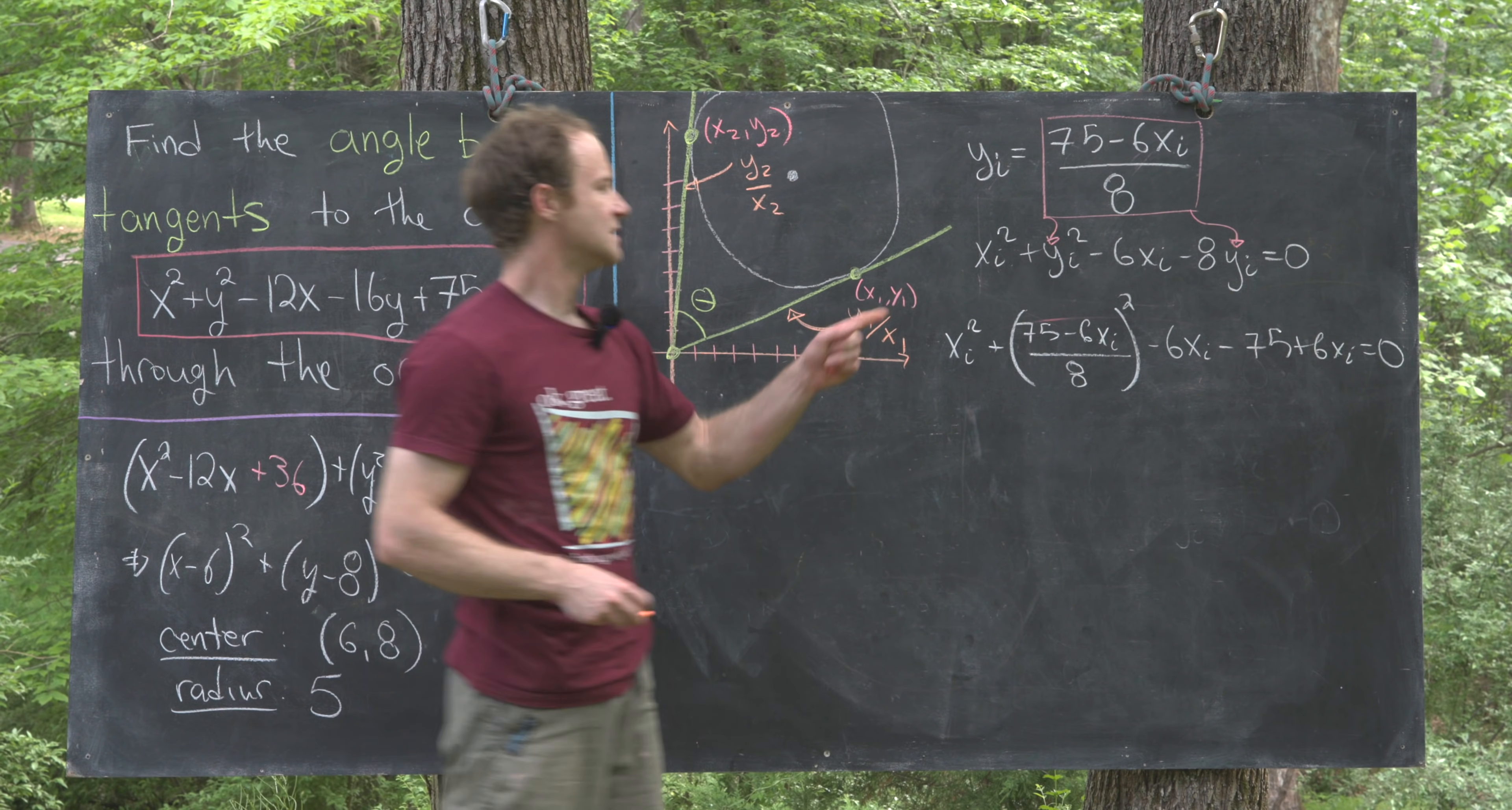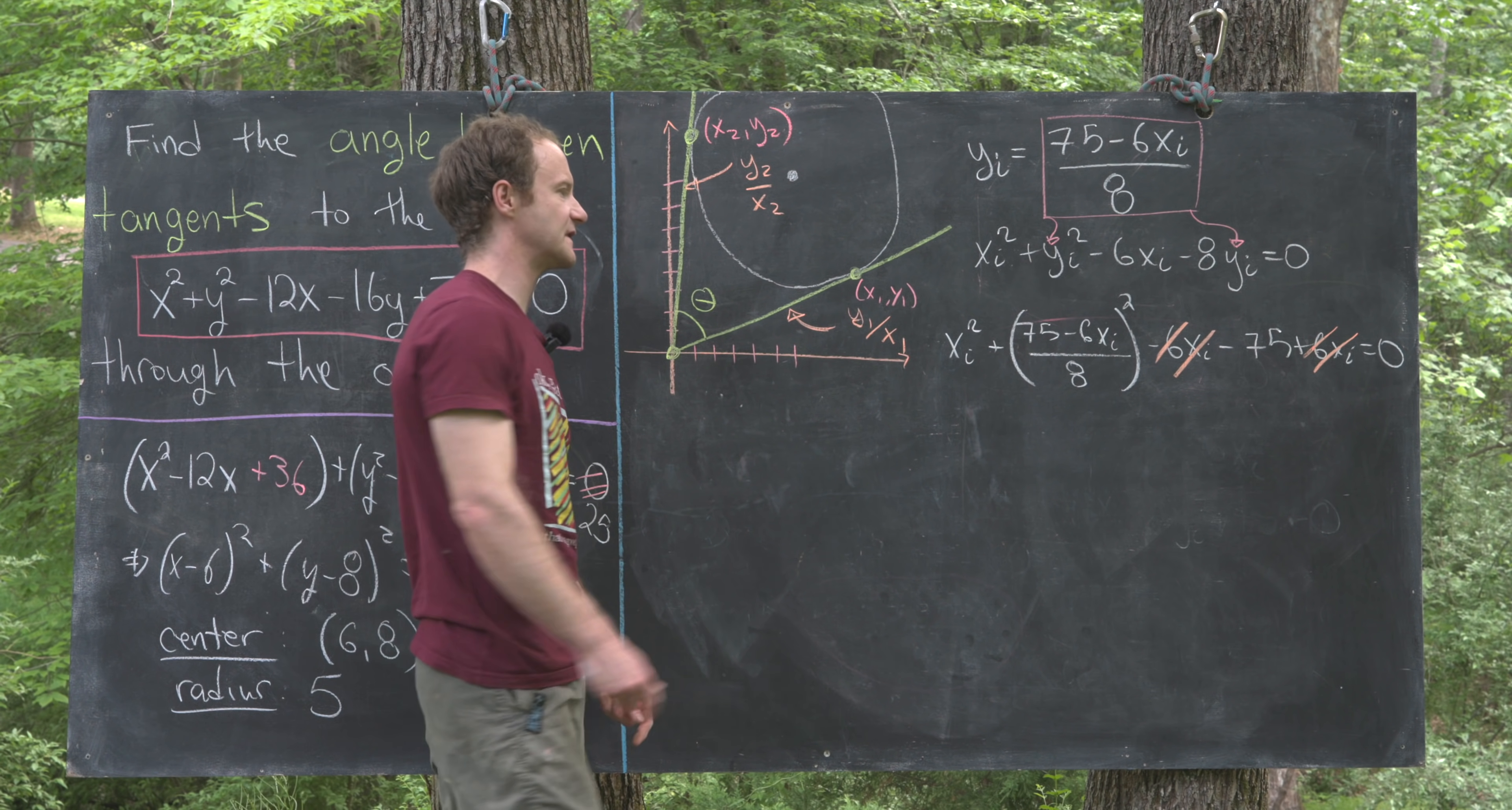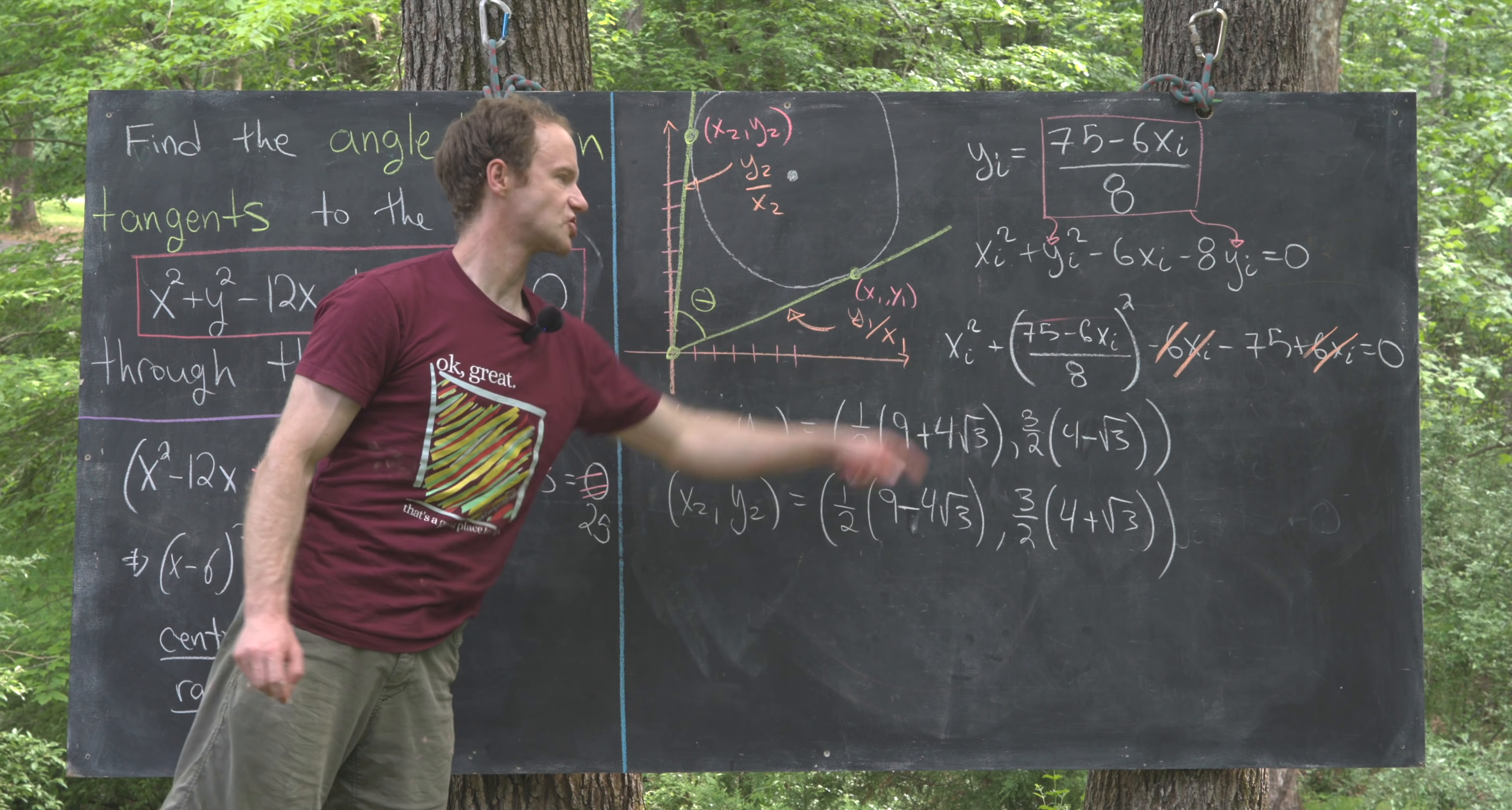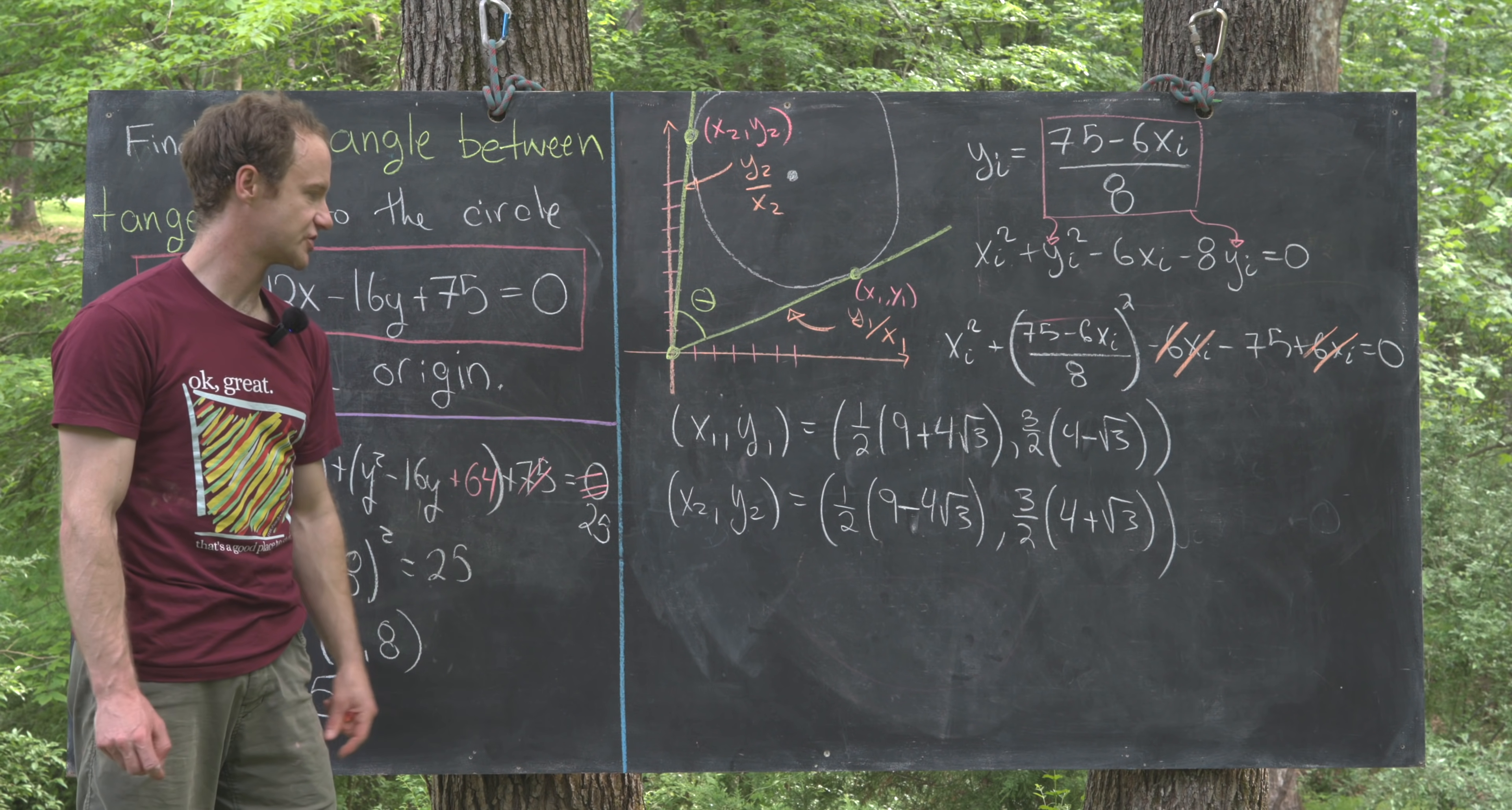Notice that this 6xi and this 6xi will cancel, which is nice. Then we've got a quadratic polynomial in xi squared. I'm not going to work out the details—I'll let you expand that out and use the quadratic formula to find the solutions. I'll just jump to having the values of x1 and x2. After solving this quadratic equation for x1 and x2, then plugging those values to find y1 and y2, we'll have the following two points.